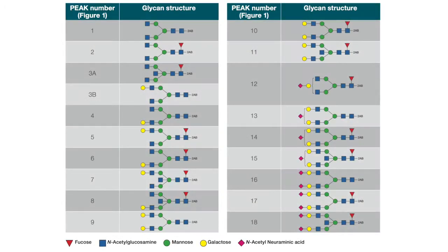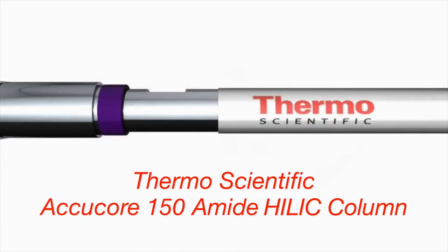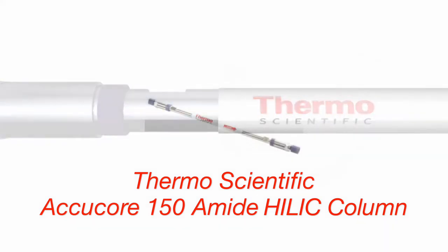In this application note, we present a step-by-step method for glycan release and labeling, separation using the Thermo Scientific ACQUITY 150 amide HILIC column, and structural identification using exoglycosidase-based sequencing and confirmation by accurate mass.